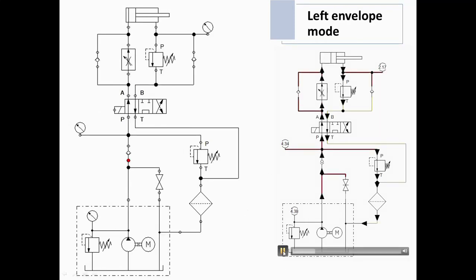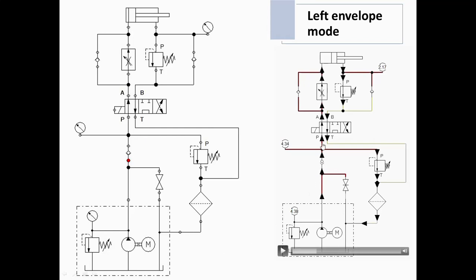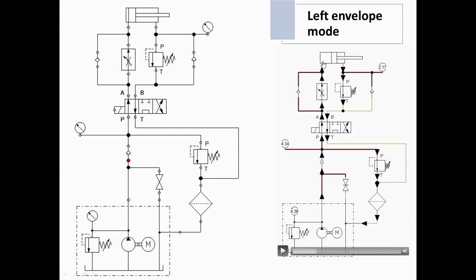Now we will go to the left envelope mode. The pump pumps the fluid from the reservoir through the open check valve. From port P it enters port A. The fluid cannot flow from the other side because that is the no-free-flow position for the direction control valve. It enters through a restricted opening slowly, causing the piston to move in the forward direction. The fluid from the rod side is sent through the pilot line, causing the pressure relief valve to open. Fluid flows from P to T, then from B to T, and back through the filter to the reservoir. This is the left envelope mode.